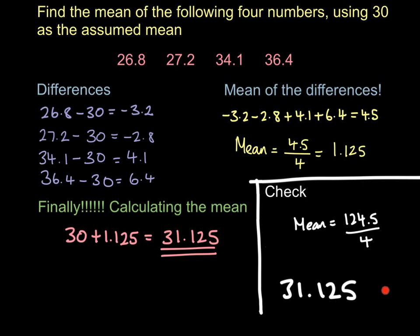You use this method if the question asks you to find the mean. You only use the other method we've just gone through if you're asked to find the assumed mean. So you find the differences, the mean of the differences, and finally get your mean. I'll always do that last check to verify that your answer is right.